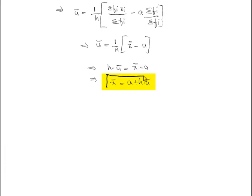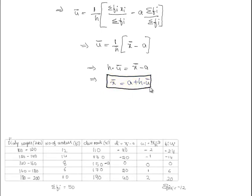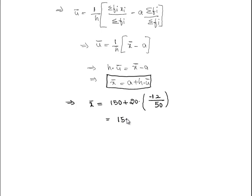Hence if we move on to the solution, we have to find the mean: A is 150 plus h we know is 20 and u bar is minus 12 by 50. Here we get 150 minus 4.8, that is 145.2. Mean is equal to 145.2. The mean daily wages of the workers of the factory is rupees 145.2.